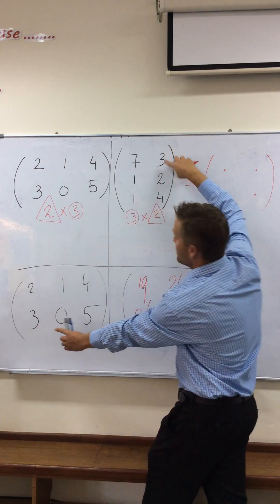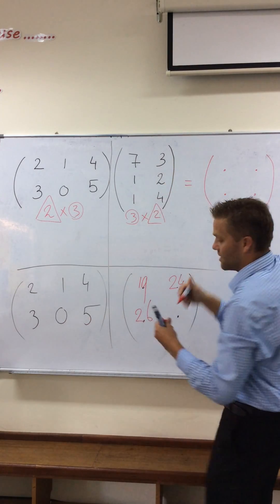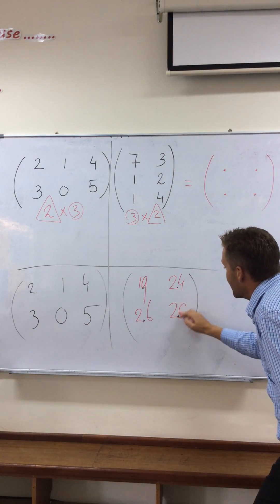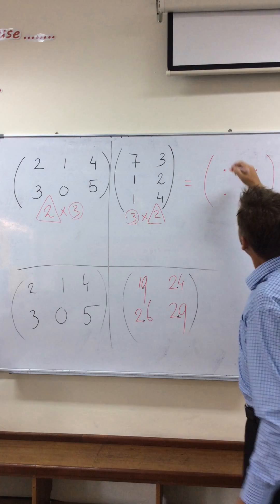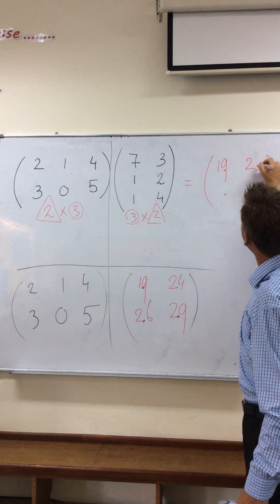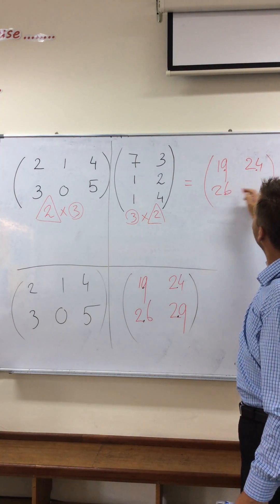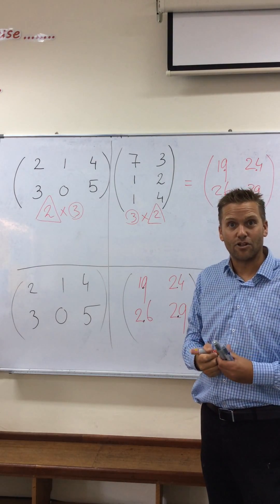And my final piece of information, three times three is nine. Zero plus five times four is 20. So 29. And I'm done. So 19, 24, 26, 29 is going to be my final solution.